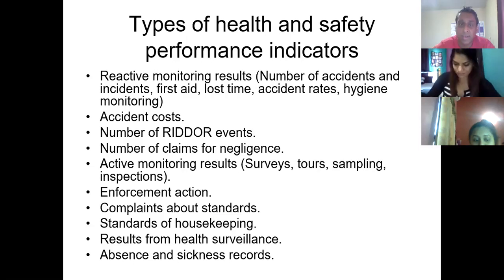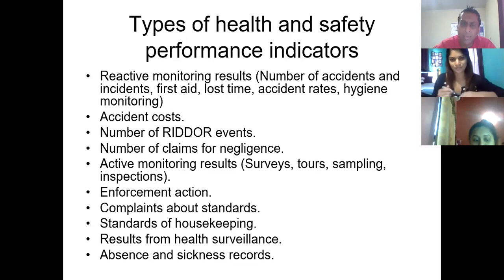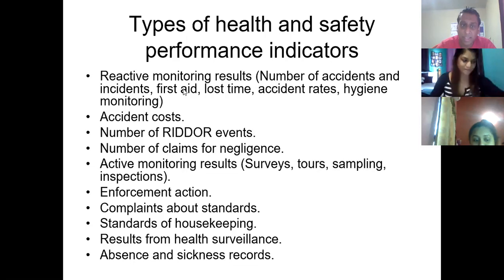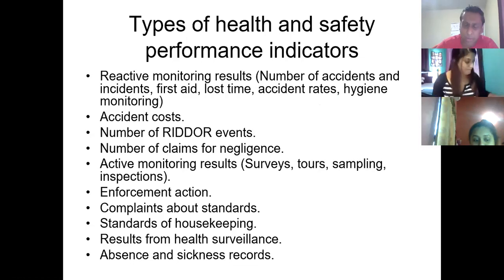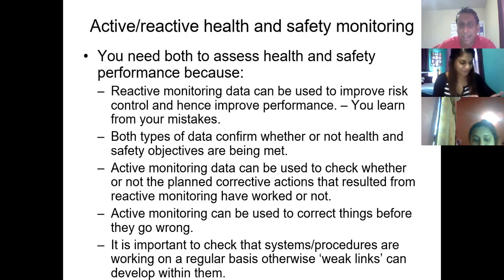You need to know more reactive indicators than active. You're going to see way more reactive ones: number of accidents, number of first aid cases, number of lost time incidents, high accident rates, et cetera. You need to measure both types of indicators — both what has happened before, like accident rates, and also the active stuff like how many inspections, surveys, and audits you are doing for the month.